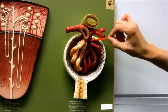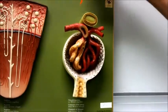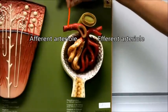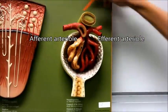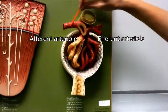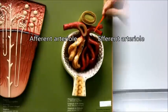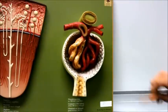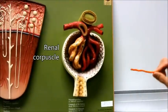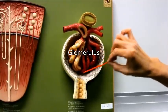Coming out of the glomerulus is the efferent arteriole. Note that the afferent arteriole is a little larger in terms of vessel size and diameter of the lumen. The efferent arteriole blood vessels are a little smaller in terms of diameter. Now let's look at the renal corpuscle again — it is composed of the glomerulus, the red blood vessels here.